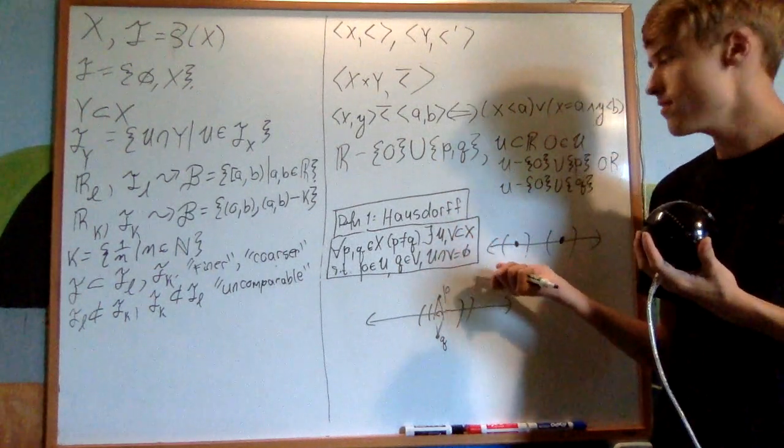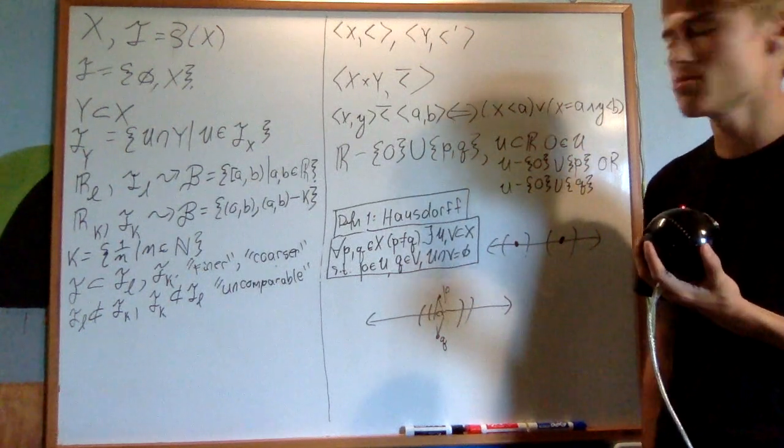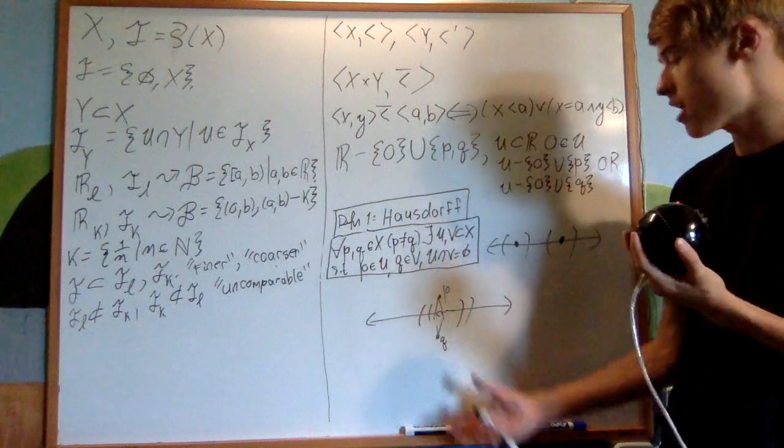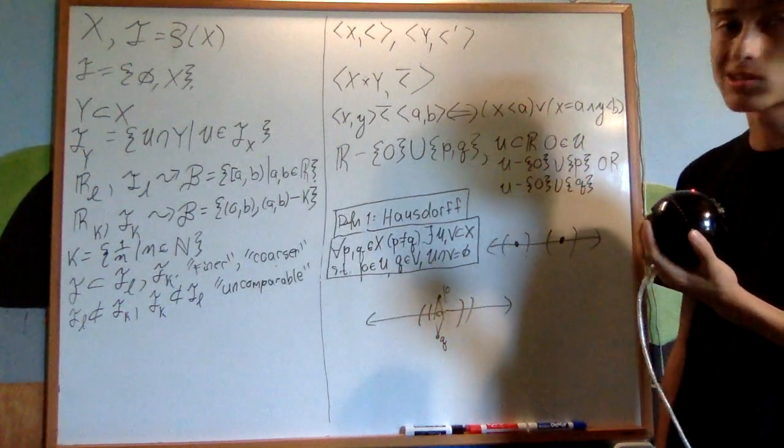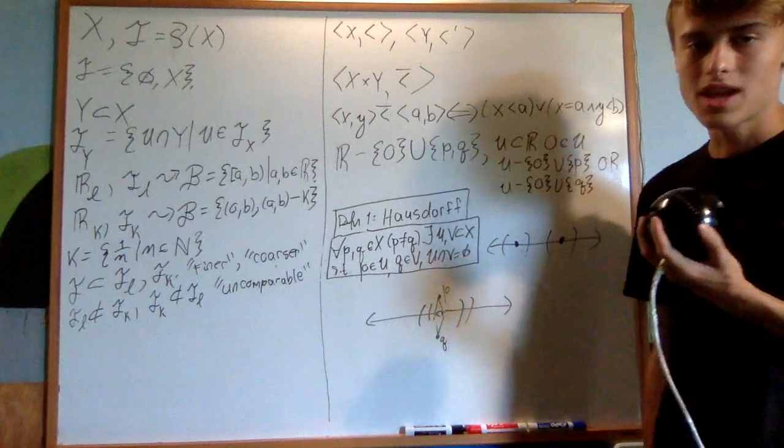And so the line with two origins is a counterexample to the Hausdorff property of topological spaces. And so you can see that even though Hausdorff is a property we want, although I haven't really discussed it much, it isn't necessarily true, even on the real numbers. Or, a real number-like system. And that's it.